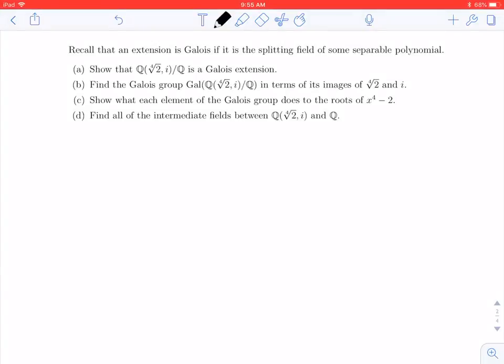Welcome back. We're going in this video to find the Galois group of Q adjoin the fourth root of 2, i over Q. And we do it in terms of looking at the images of the fourth root of 2 and i, which we know we can do.